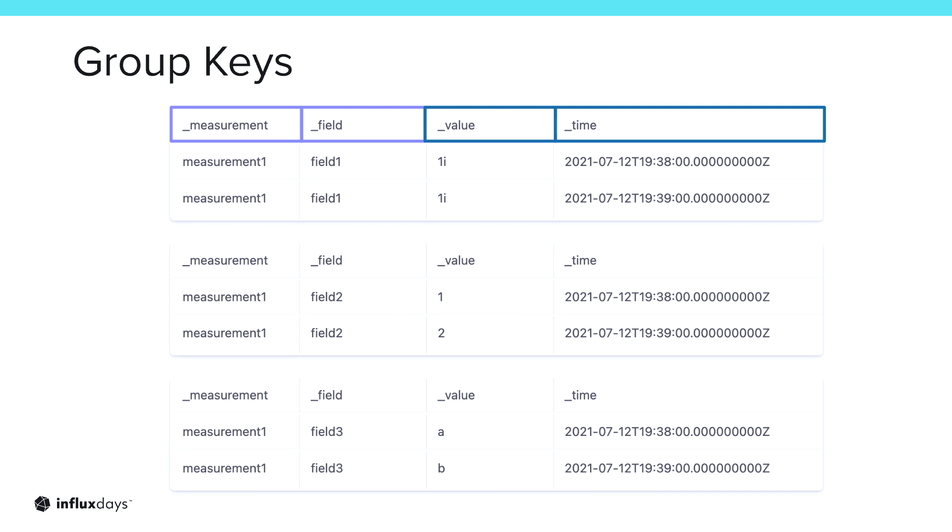So following that example we just looked at, if we look at the three tables that we've produced here, we have four columns, underscore measurement, underscore field, underscore value, and underscore time. And underscore measurement and underscore field, we notice that for each table, each record in that table, they have the same values. So that's why these two columns are part of the group key. Whereas the underscore value and the underscore time columns, they have different values. So those are not part of the group key.